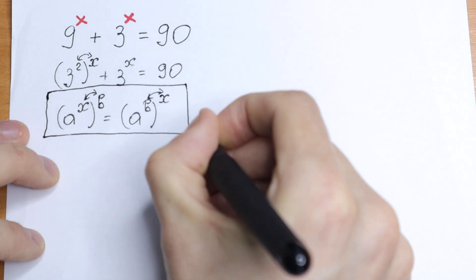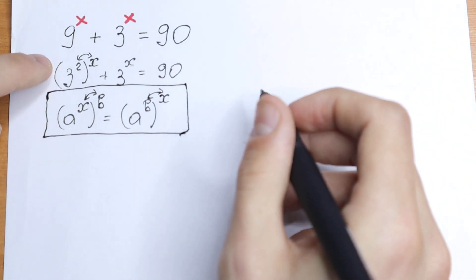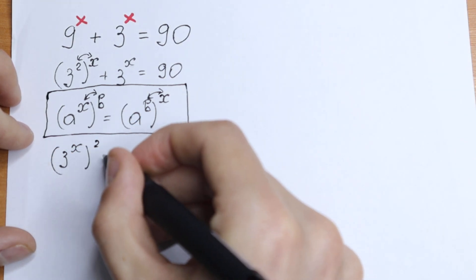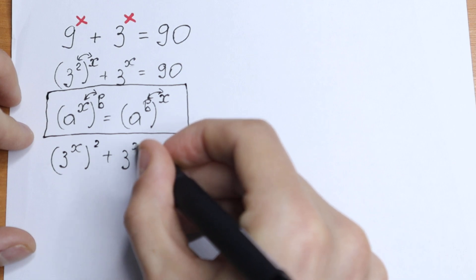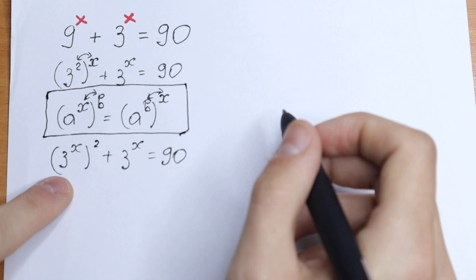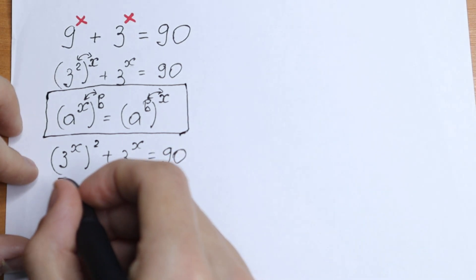So remember this or learn this rule. Take a look next. We can swap this. So as a result we will have 3 to the power x squared plus 3 to the power x equal to 90. We have 3 to the power x and we have 3 to the power x. So this is the same as right here.